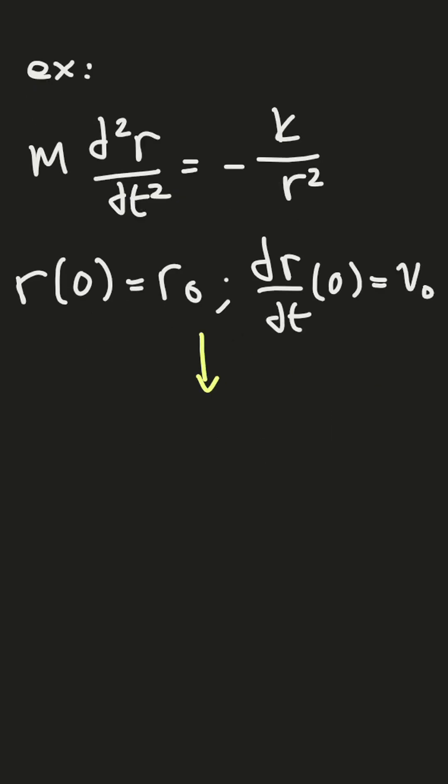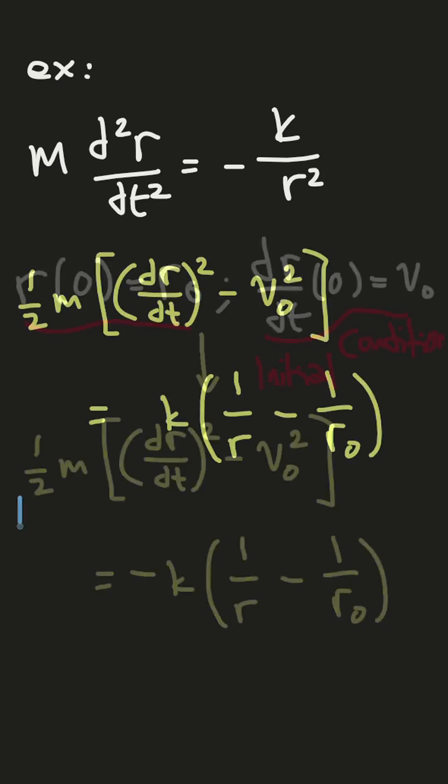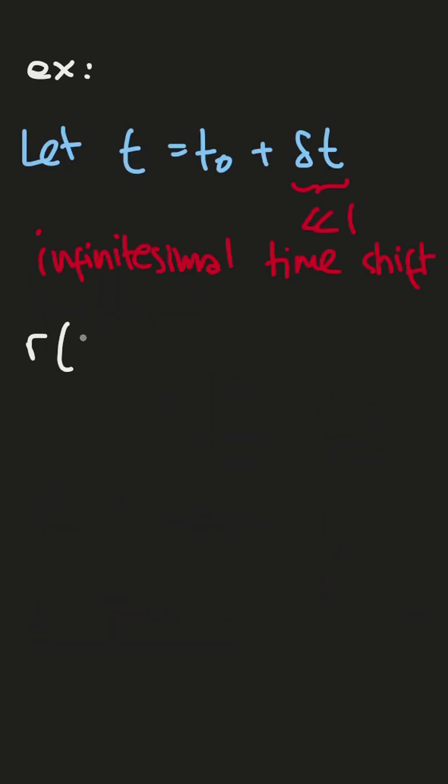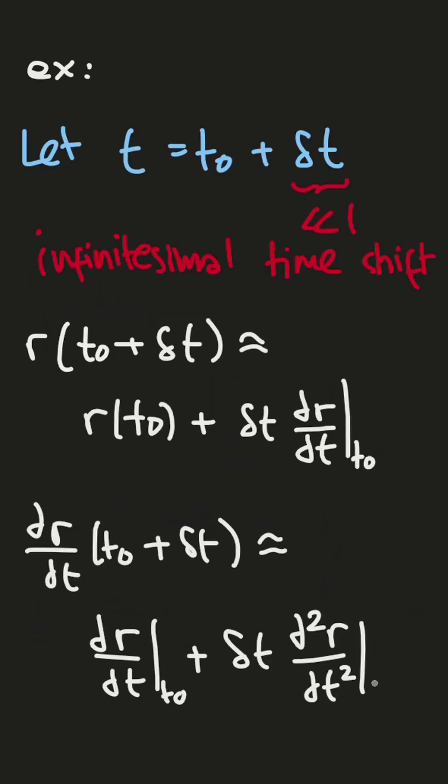with those two initial conditions. Then if we let t equal t0 plus delta t as infinitesimal time shift, r and its first derivative will equal to this, where both second terms here I can